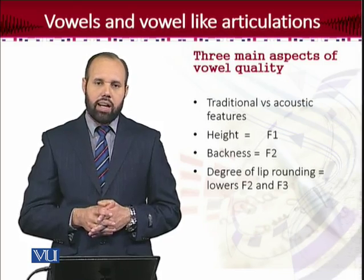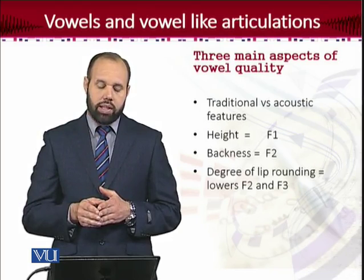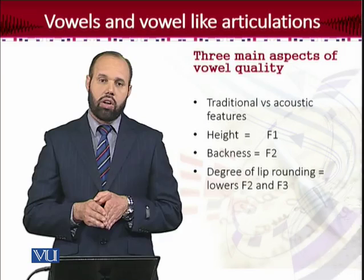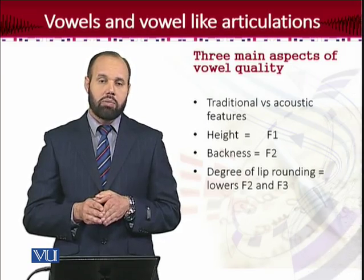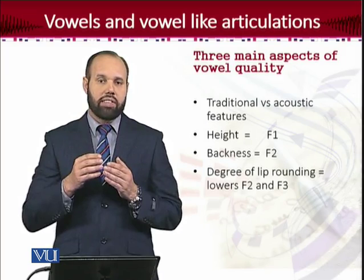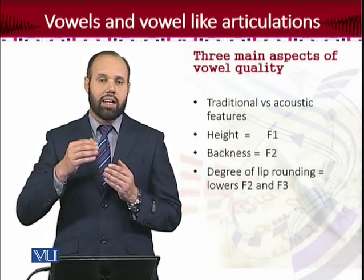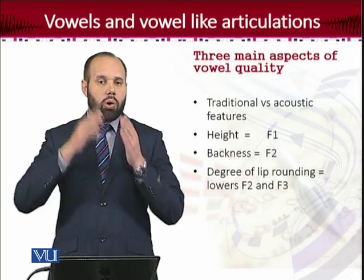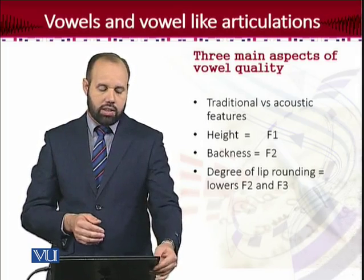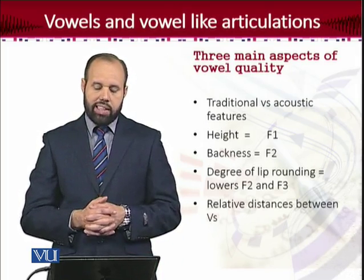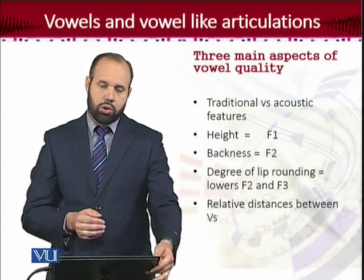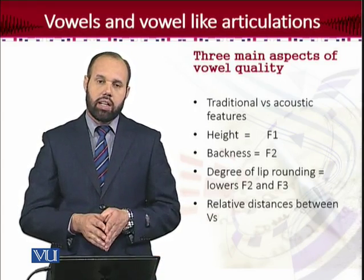Talking about lip rounding, lip rounding acoustically is connected with the lowering of F2 and F3. Like in our discussion on bilabial consonants, we talked about the lowering of the second and third formant. So there is a connection that the degree of lip rounding is also realized in the acoustic analysis of vowels. The relative distances between vowels are also important and those are determined through the traditional articulatory and auditory features.